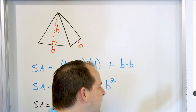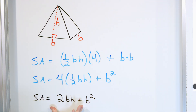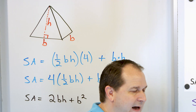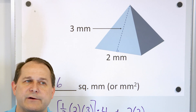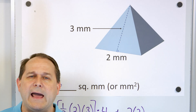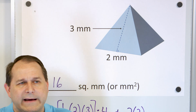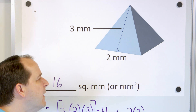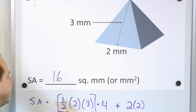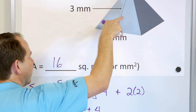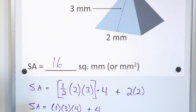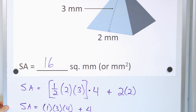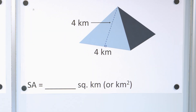Notice I did not use the formula. I could have put 2BH + B² and plugged the numbers in, but the problem with that is you lose sight of what you're doing — you're just cranking math without knowing what the equation means. By doing it this way, you say: this is the area of this triangle, I have four of them, this is the area of the base, add it up. That's the way I would personally do it.